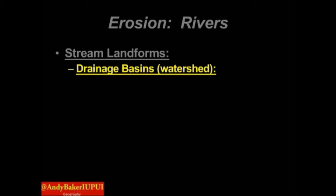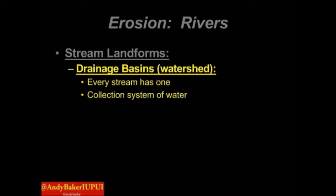Continuing on with stream landforms. Next up, a drainage basin or a watershed. Every single stream is part of a bigger drainage basin or watershed. We've got a very hierarchical structure in which smaller streams feed into bigger streams. Think of it like a tree — stems from a leaf flow into a twig, which flows into a branch, which flows into the trunk. Everything eventually meets at the massive trunk. Same idea for collection of water, i.e. rivers, collected by streams via gravity and slope.